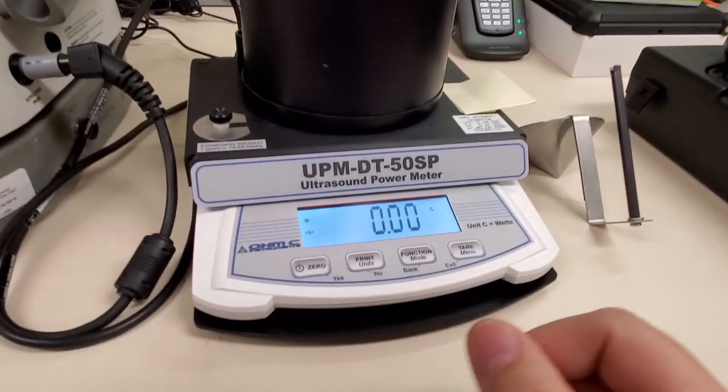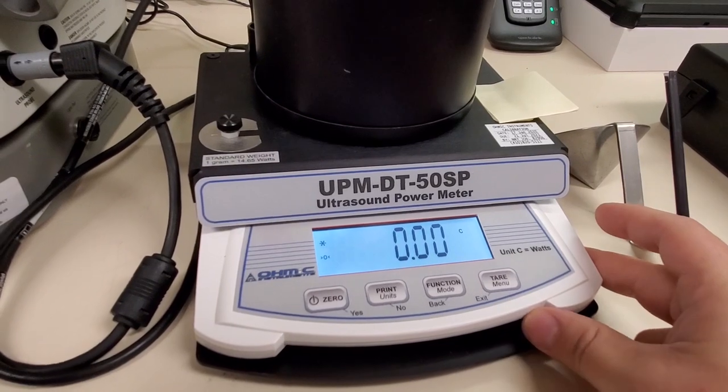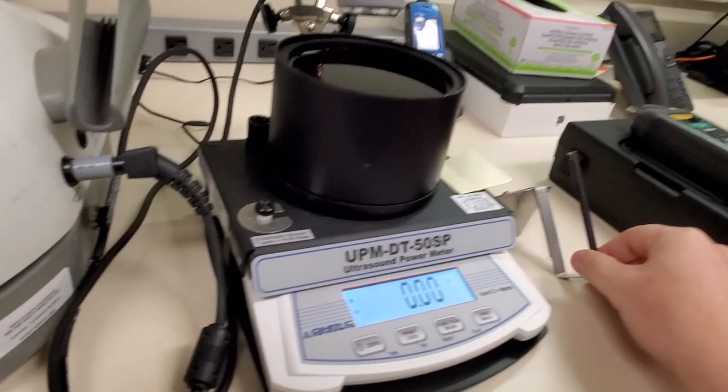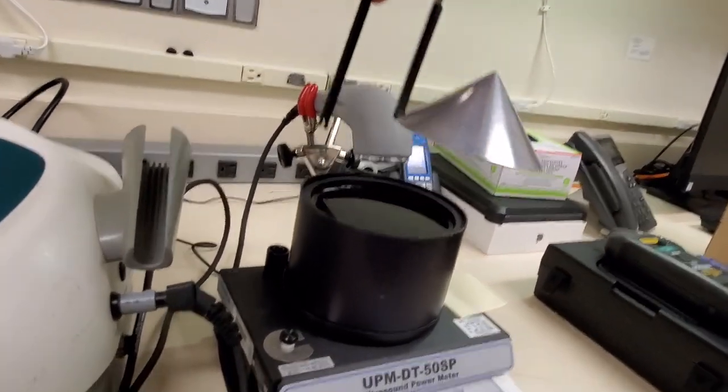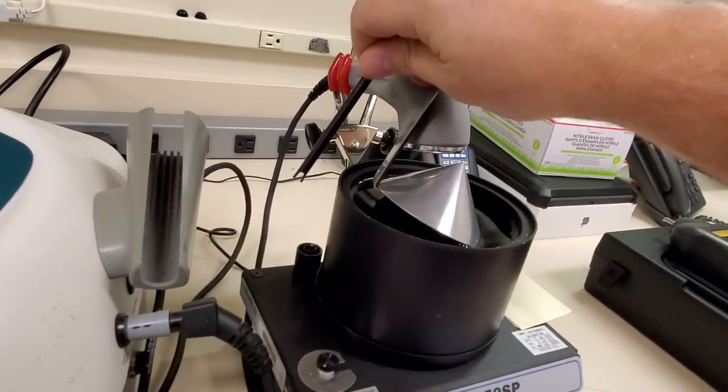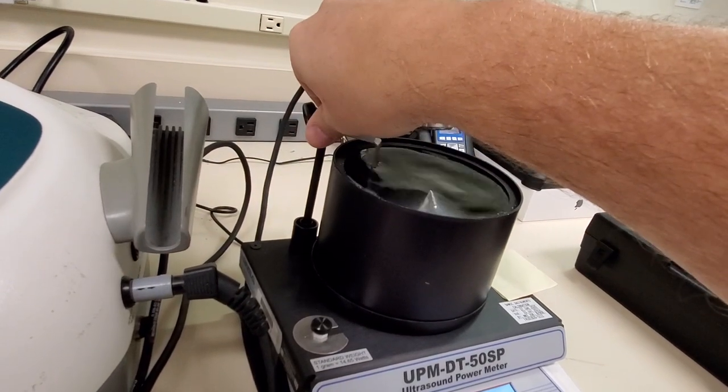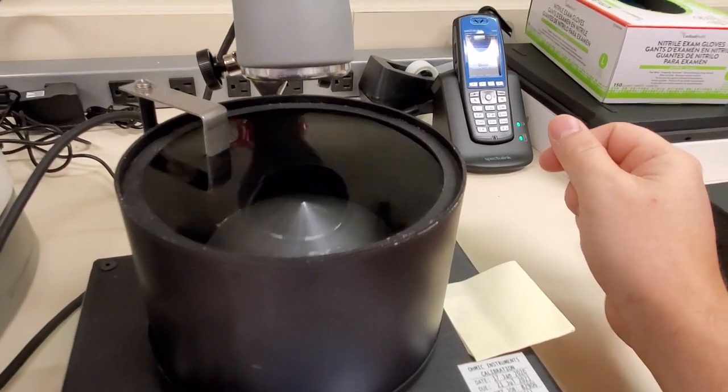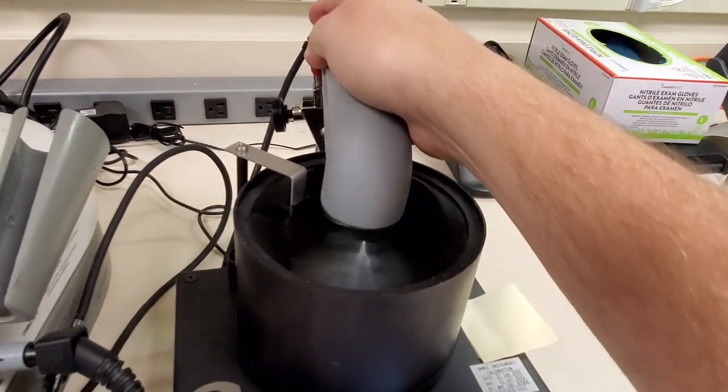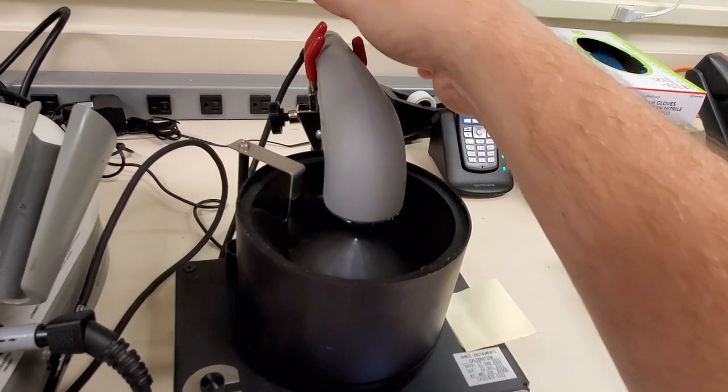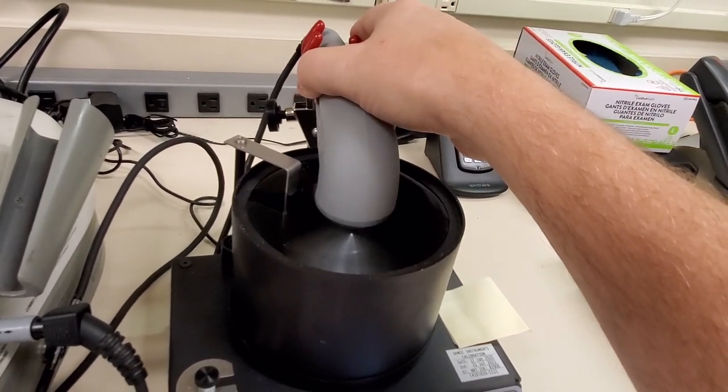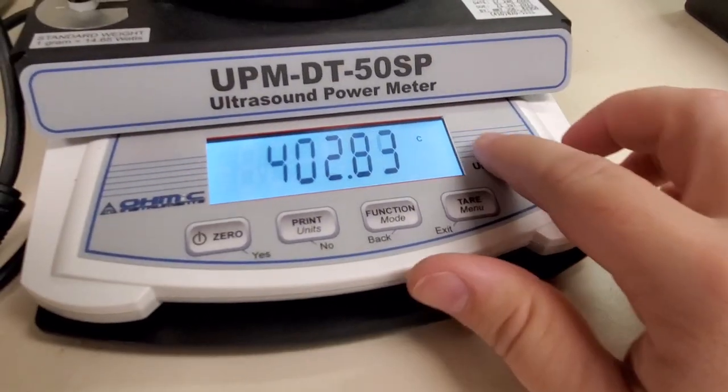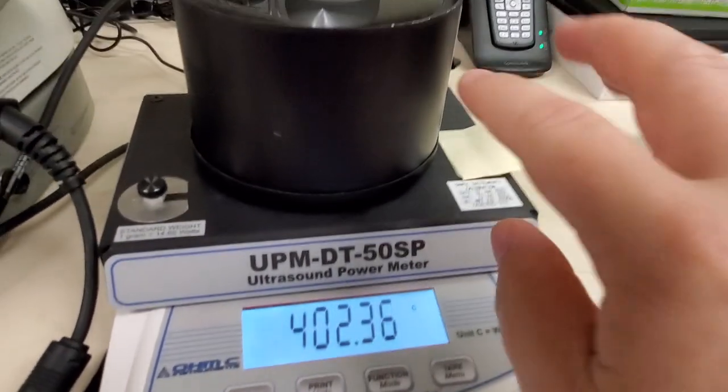We measure it using an ultrasound power watt meter, which you can see is just a modified OHAUS scale. It consists of a cone that's suspended from the measuring element. It goes into a bath of degassed water, and the head will lower down into the water right atop the cone. We let the water quit moving around.